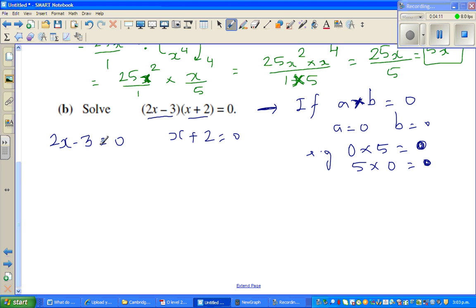Now when is this 0? For 2x minus 3 to be 0, this has to become 3. Because 3 minus 3 is 0. So I can say 2x has to be 3. Now if you divide this side by 2, you have to divide this side by 2. So this and this gets cancelled. So x is 1.5. Now when is this 0? This has to be negative 2. So x is negative 2.